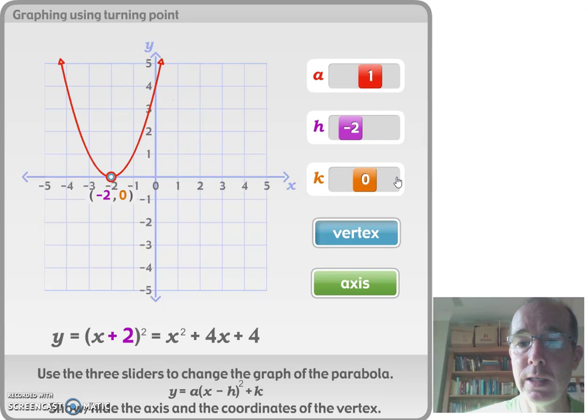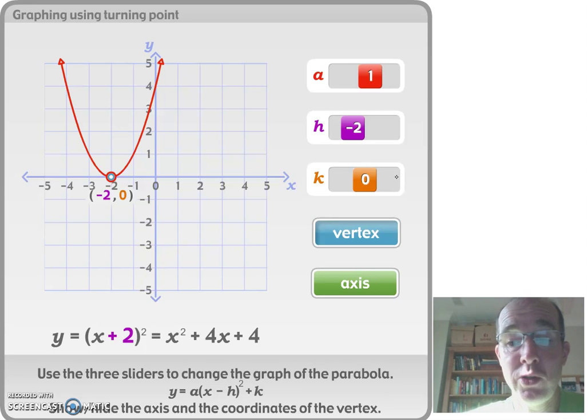Moving that to the left, you can see the effect on both the graph itself. Okay, shifting it to the left, now making the vertices negative 2 comma 0. The vertices is just another name for the turning point.